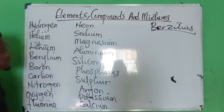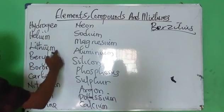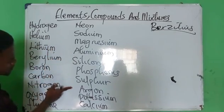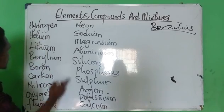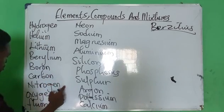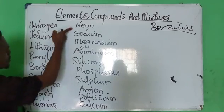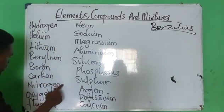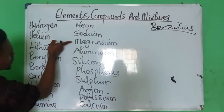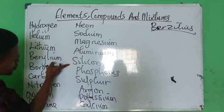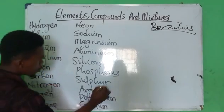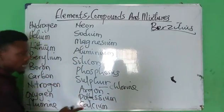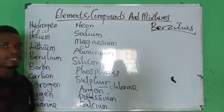Let's count them: 1-hydrogen, 2-helium, 3-lithium, 4-beryllium, 5-boron, 6-carbon, 7-nitrogen, 8-oxygen, 9-fluorine, 10-neon, 11-sodium, 12-magnesium, 13-aluminum, 14-silicon, 15-phosphorus, 16-sulfur, 17-chlorine, 18-argon, 19-potassium, and 20-calcium. So these are the first 20 elements.